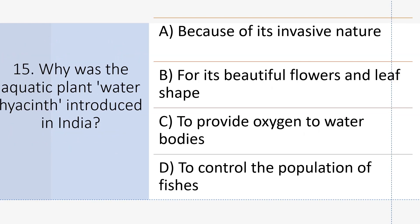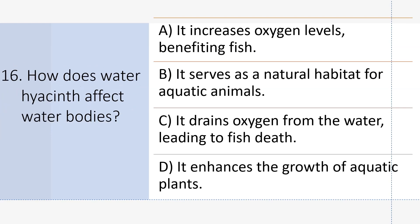Why was the aquatic plant water hyacinth introduced in India? Answer B: For its beautiful flowers and leaf shape. How does water hyacinth affect water bodies? Answer C: It drains oxygen from the water, leading to fish death.